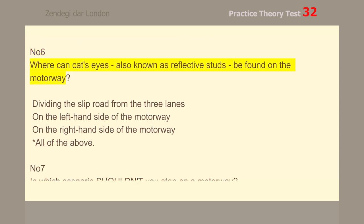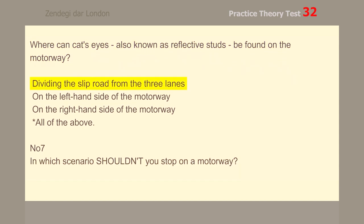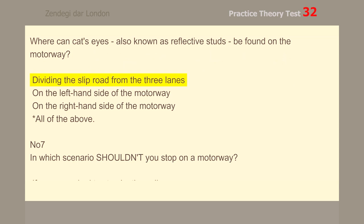Number 6. Where can cat's eyes, also known as reflective studs, be found on the motorway? Dividing the slip road from the 3 lanes, on the left-hand side, on the right-hand side — all of the above.